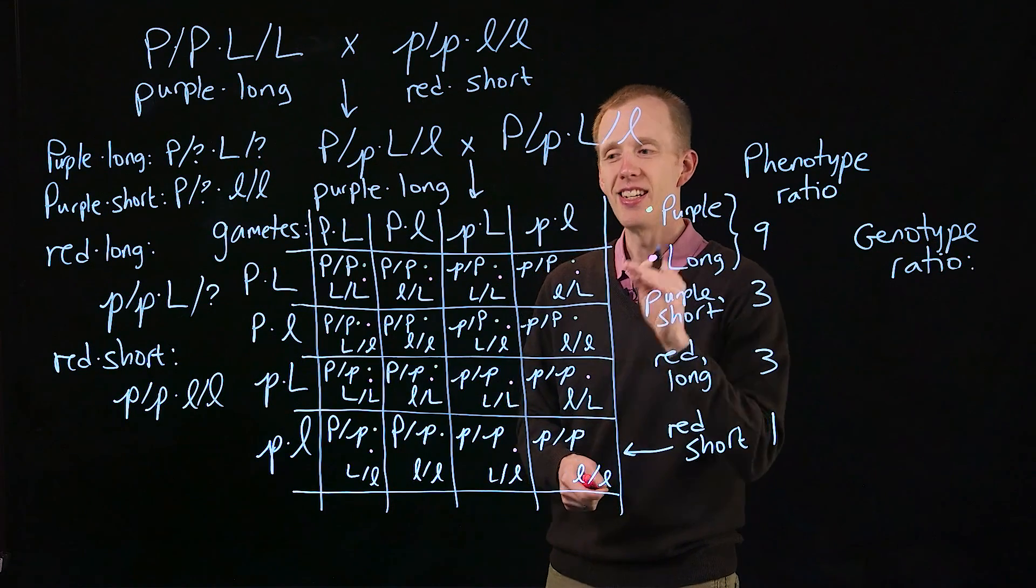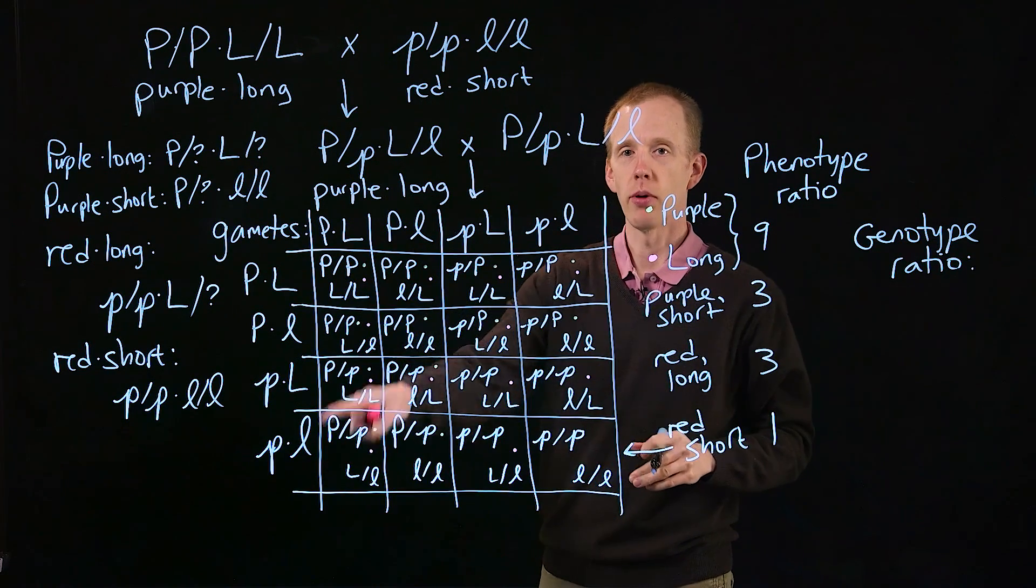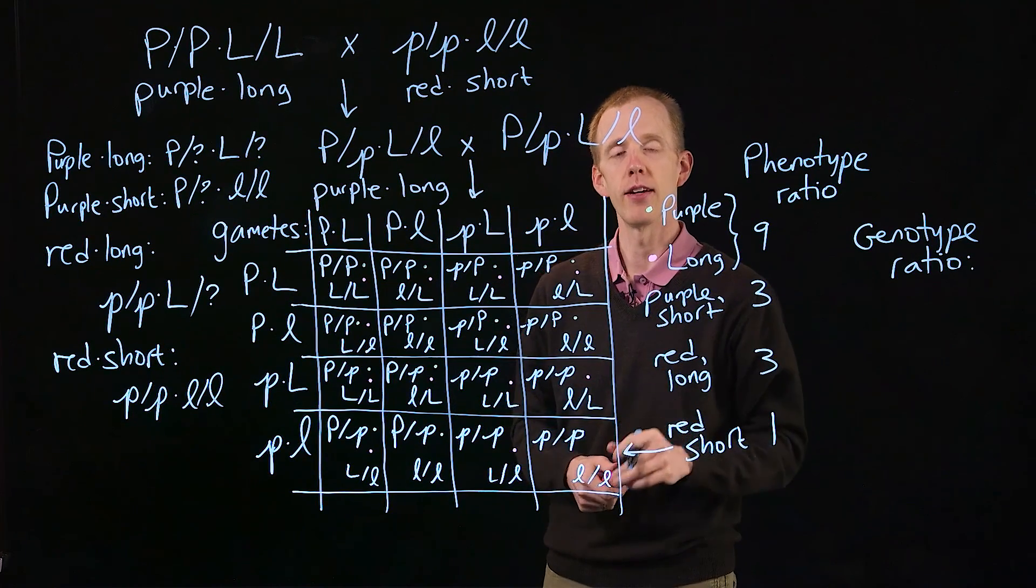Tabulate how many different genotypes are there among these sixteen squares, and what ratio are they in?